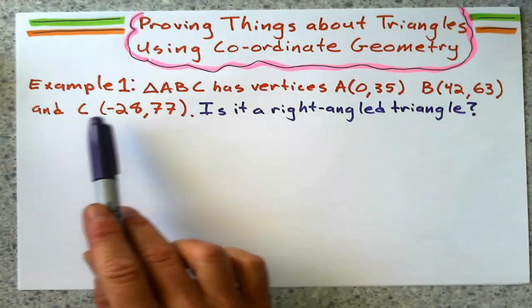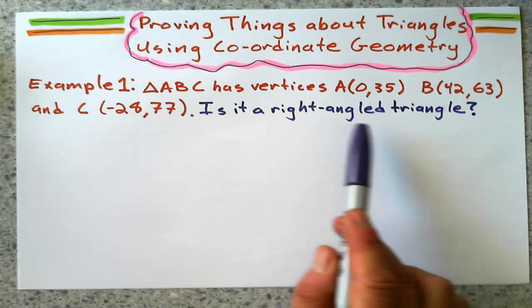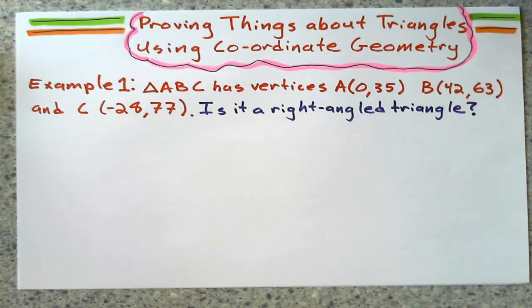of A, B, and C, and here's their coordinates. We don't want to graph this, really. And I'm going to ask, is it a right-angle triangle?